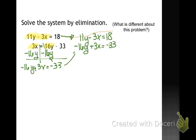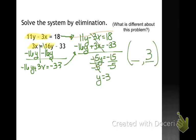So this is going to give me negative 16y plus 3x equals negative 33. And when I do that, I can see that I have opposites. So all I have to do is add the two equations together to solve them. So that gives me y equals 3.